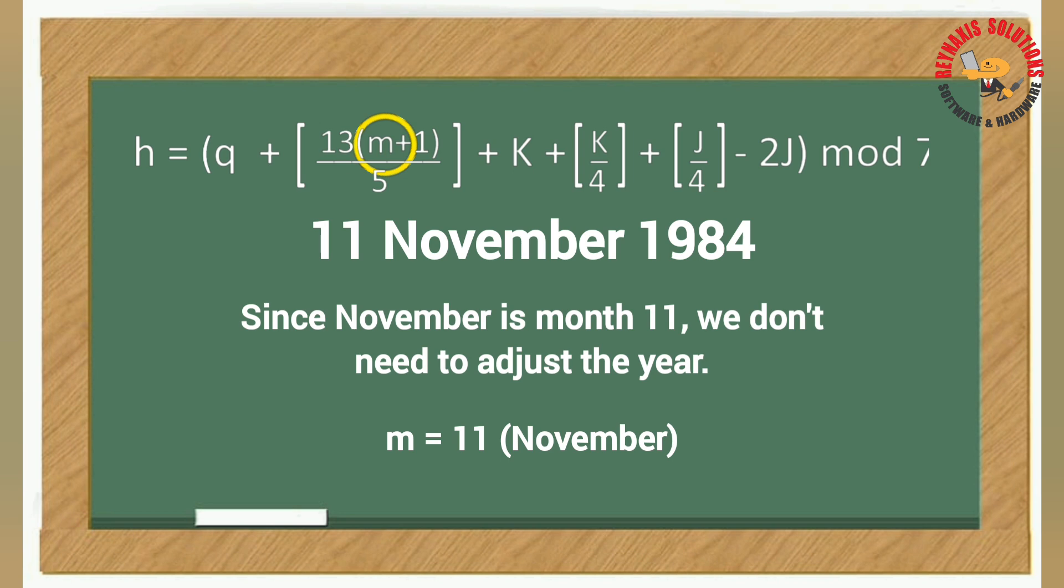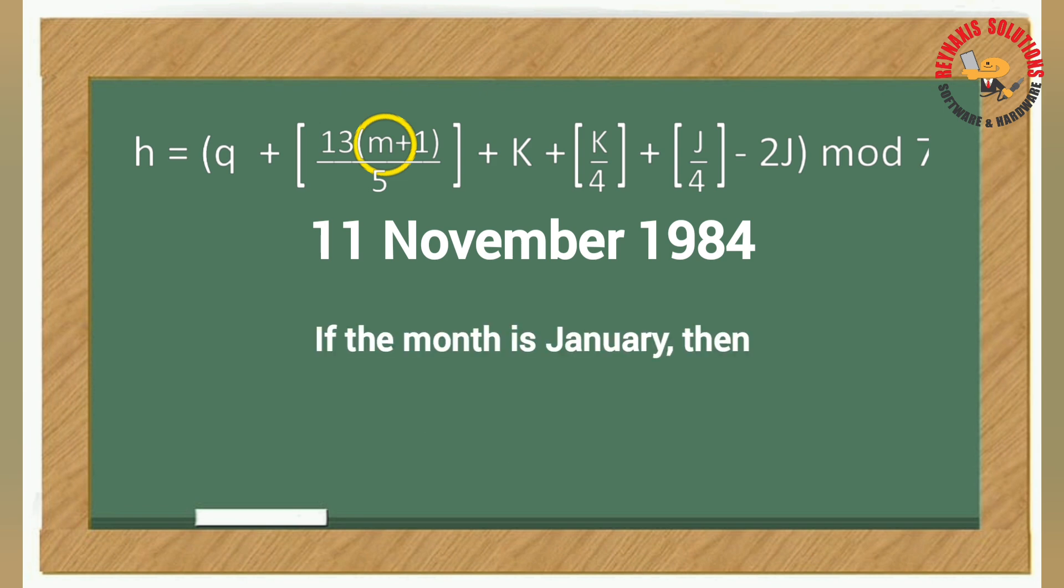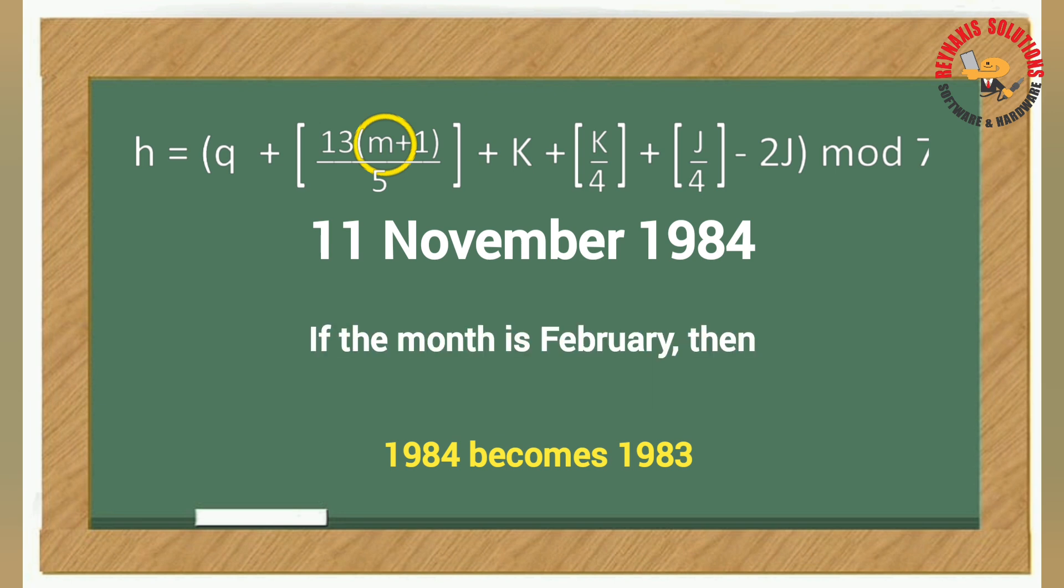If the given months are January or February 1984, then we will use 13 and 14 for the given months and we deduct one year from the given year, so the year 1984 will become 1983.